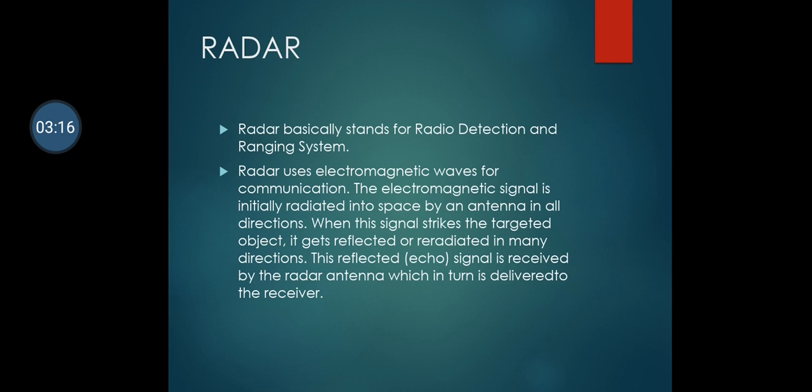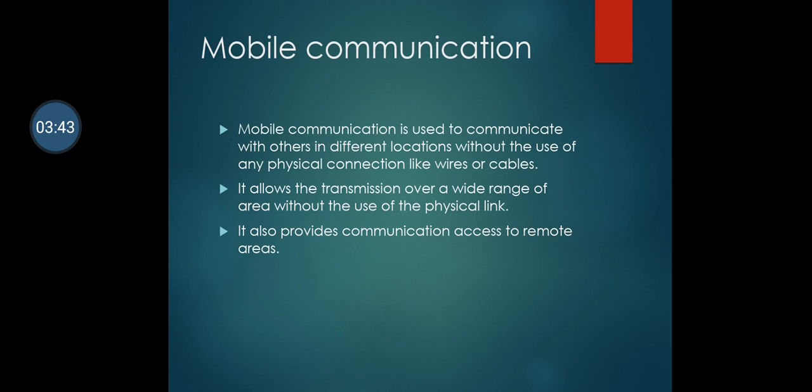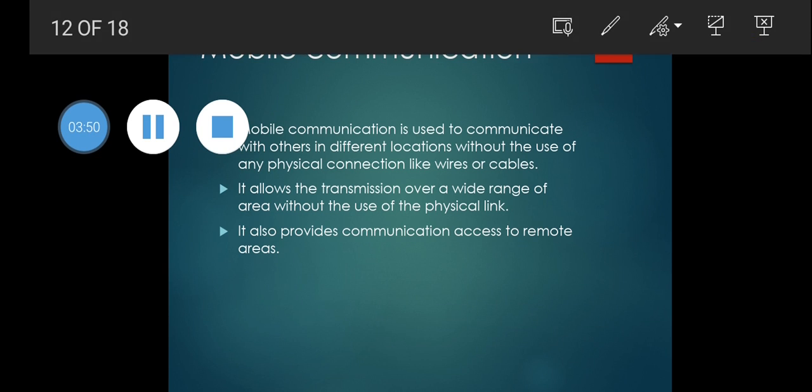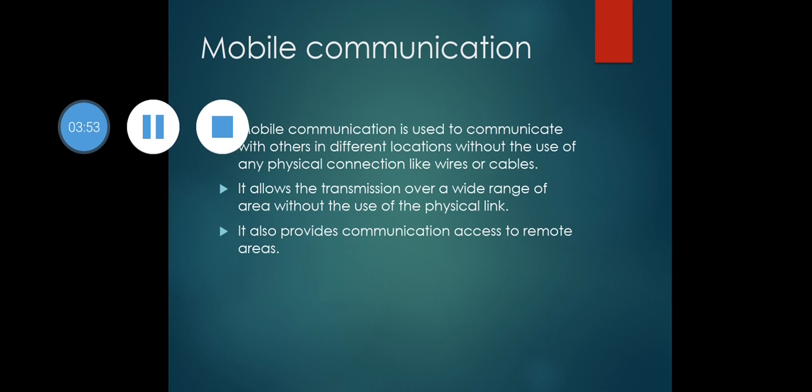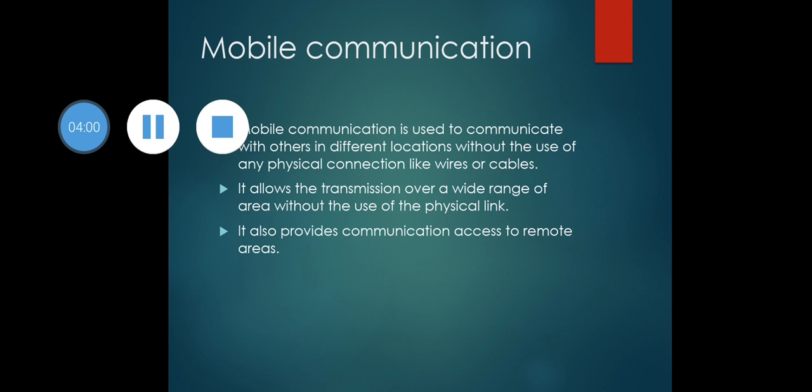Radar uses electromagnetic waves for communication. The electromagnetic signal is initially radiated into space by an antenna in all directions. When the signal strikes the targeted object, it gets reflected or re-radiated in many directions. This reflected echo signal is received by the radar antenna, which in turn delivers it to the receiver.